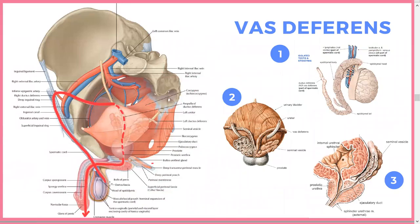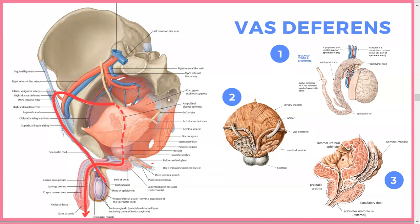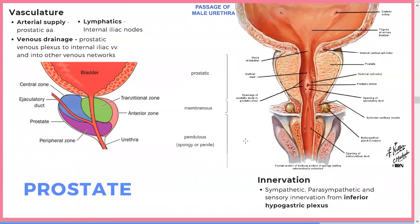The vas deferens makes a big loop: from the testes and epididymis, it goes up through the inguinal canal, then posteriorly behind the urinary bladder near the seminal vesicle, and back down to rejoin the urethra at the level of the prostate. The prostate has different zones: transitional, peripheral, central, and anterior. It's important to know lymphatic and venous drainage because they relate to metastasis.